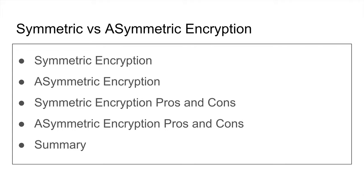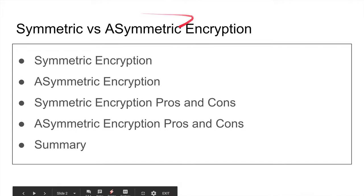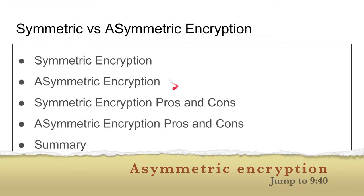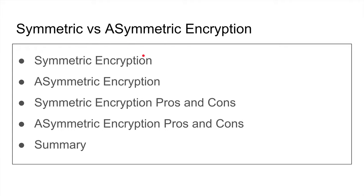We're going to talk about symmetric encryption and then asymmetric encryption. I'd like to think symmetric encryption is just called 'encryption' — it's the first thing people came up with. In software engineering, we don't just make things up out of the blue; there is always a problem and we consult experts to come up with algorithms to solve it.